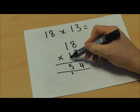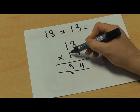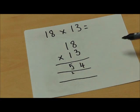I now need to multiply by this 1, by the 10. So I'm going to do 18 times 10. I'm going to do this in a new row.